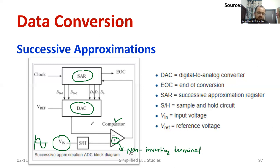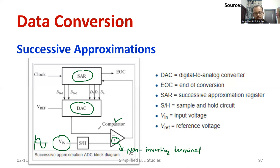The inverting terminal is fed with the output of the digital to analog converter from the previous state. So what you are supposed to do is, using a comparator, compare VIN with the previous DAC output. The differential output will be given to the successive approximation register, SAR.